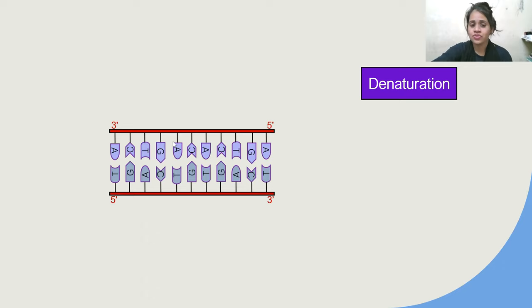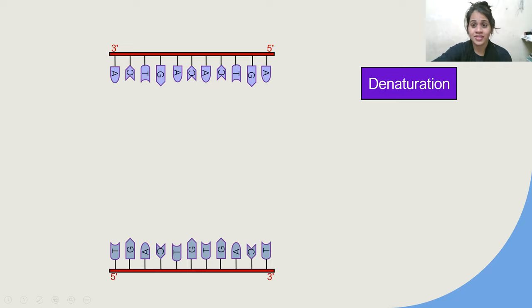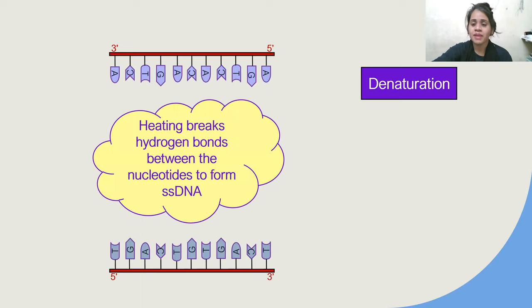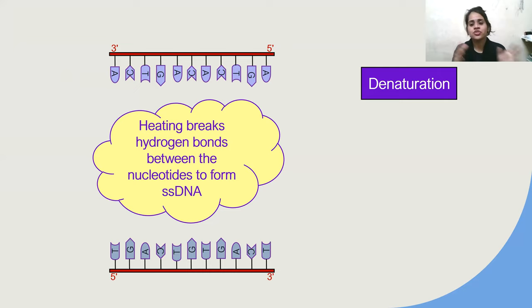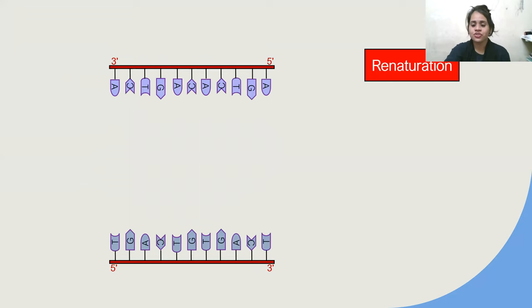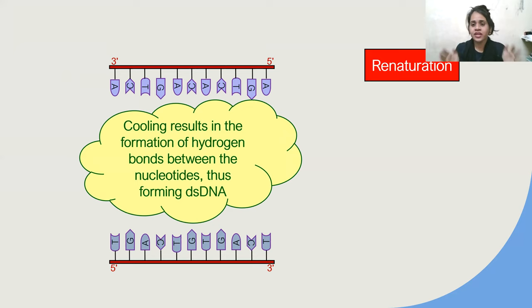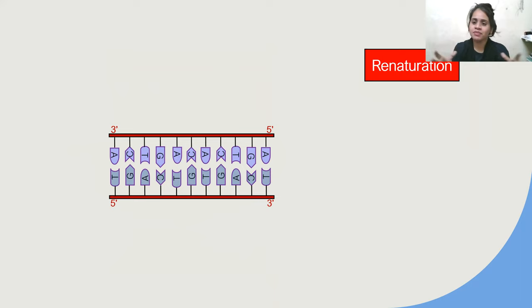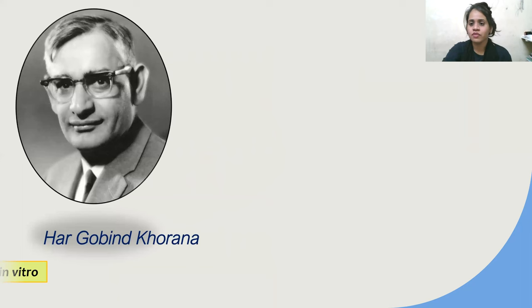Discoveries that led to the evolution of recombinant DNA technology include denaturation and renaturation of DNA, artificial synthesis of genes in vitro, and various tools in rDNA technology. Denaturation is when two DNA strands get separated by breaking the weak hydrogen bonds between them, turning double-stranded DNA into single strands. Renaturation is when, due to a cooling effect, the hydrogen bonds reform and the two strands come back together to form double-stranded DNA again.